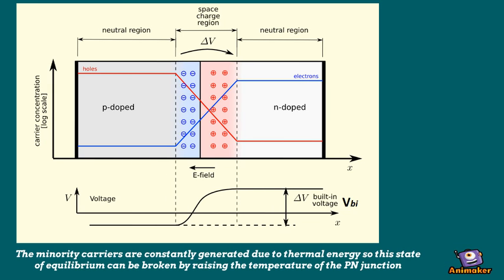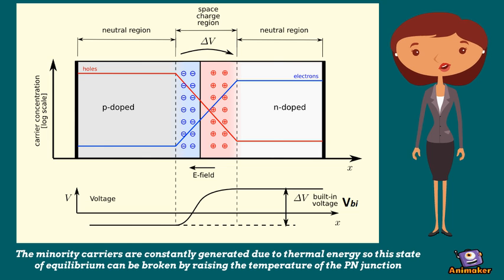On a side note, the minority carriers are constantly generated due to thermal energy, so this state of equilibrium can be broken by raising the temperature of the P-N junction.